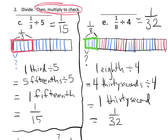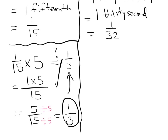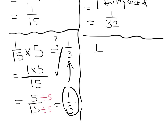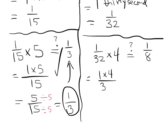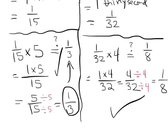Now we have to check to make sure we are correct, so we'll use multiplication. We're going to do one-thirty-second times four and see if we get one-eighth. Multiplying: one-thirty-second times four gives us one times four over thirty-two, which is four over thirty-two. Both numbers are divisible by four — four divided by four is one, thirty-two divided by four is eight — so the answer is one-eighth. That checks out.